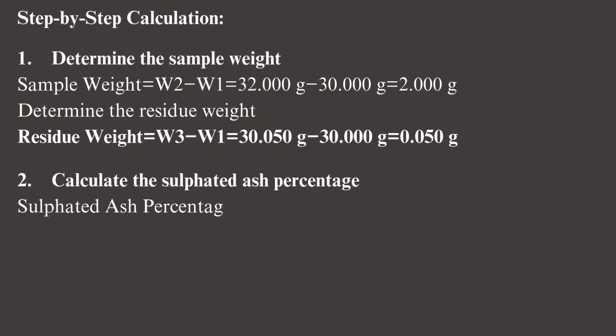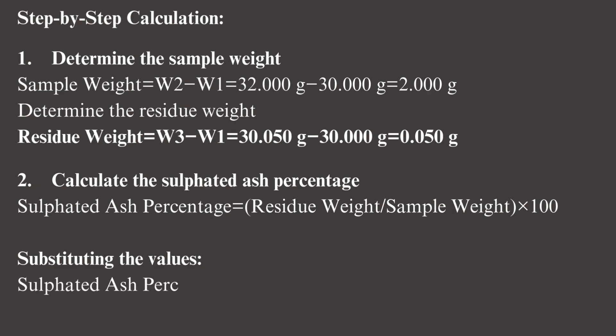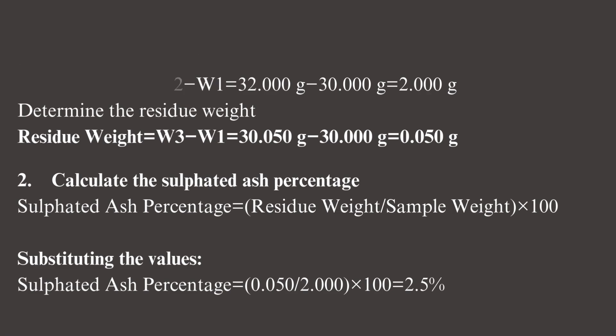Calculate the sulfated ash percentage: sulfated ash percentage equals residue weight divided by sample weight times 100. Substituting the values: sulfated ash percentage equals 0.050 divided by 2.000 times 100 equals 2.5%.